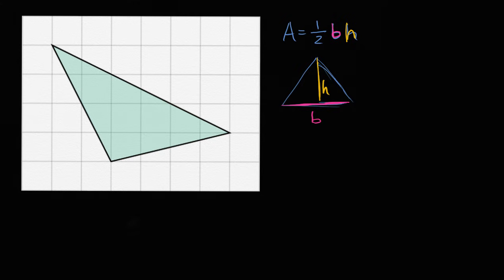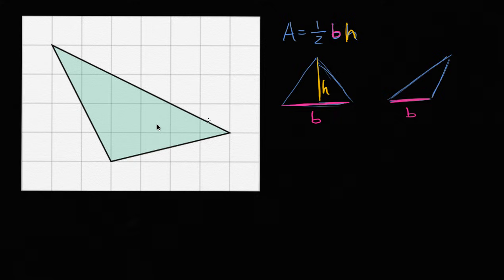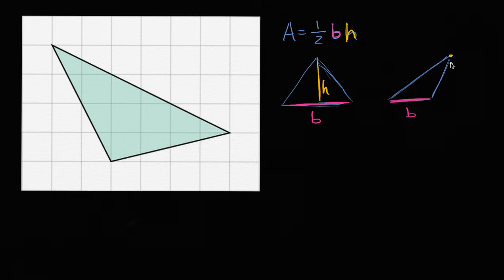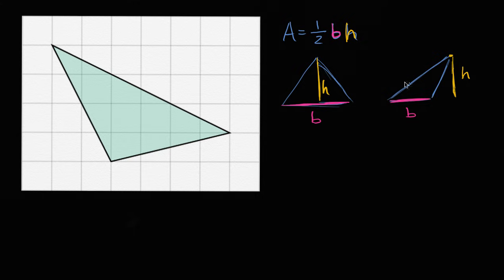Or if the triangle looked like this — where if this is the base b, and the height drops outside the triangle — it looks different, but this would still be the height. One half times base times height would give you the area of this triangle too.